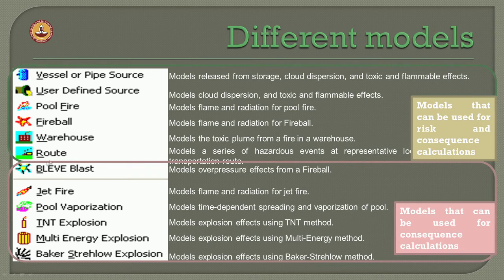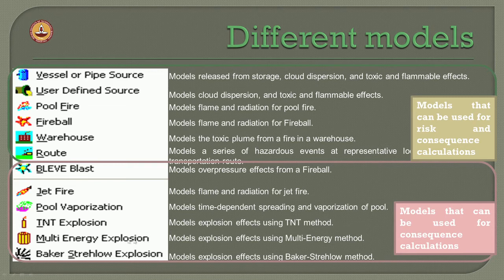Additionally, one can use the BLEVE blast model for overpressure effects from a fireball, general jet fire model for flame and radiation from a jet fire, pool vaporization model for time-dependent spreading and vaporization of a pool, TNT explosion model using the equivalence method, and multi-energy and Baker's Strehlow explosion models for explosion effects. The vessel/pipe, user-defined source, pool fire, fireball, warehouse and root models are useful for both risk and consequence calculations, while the explosion-specific models are useful for consequence calculations only.